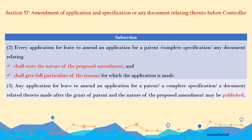Section 57, Subsection 2: Every application for leave to amend an application for a patent or complete specification or any related document shall state the nature of the proposed amendment and shall give full particulars of the reasons for which the application is made — that is, why the amendment is required and what amendment will be done. It is to be correctly and clearly described in the form.